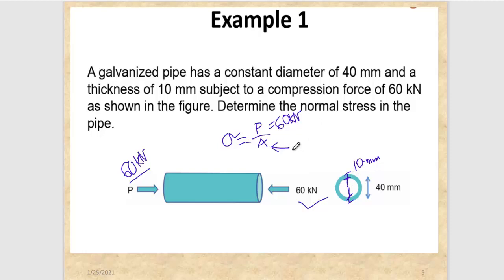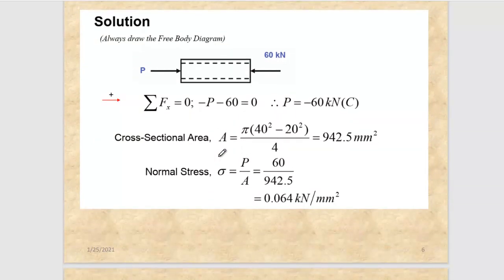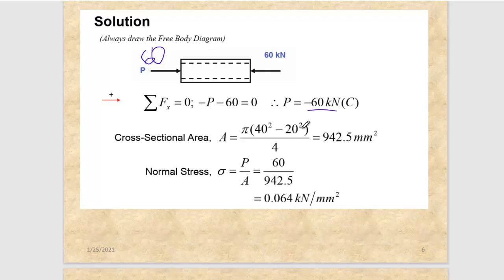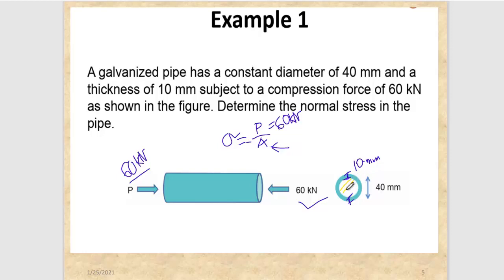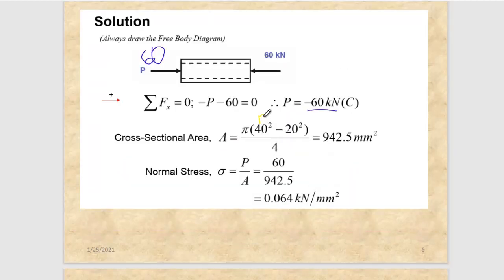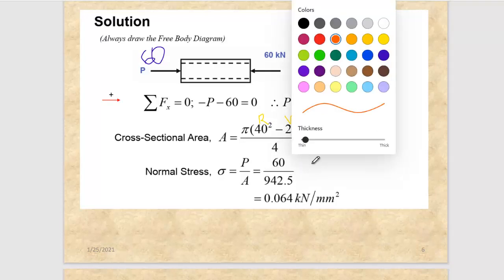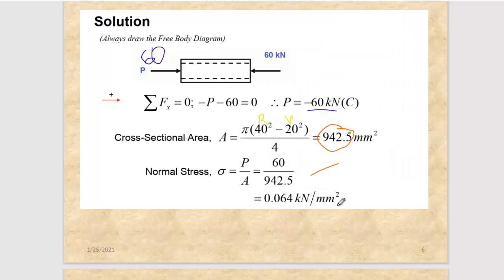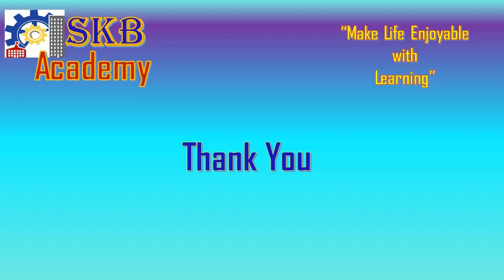From equilibrium, P equals 60 kN. The negative sign shows it is compression. For the area: total diameter is 40 mm, hollow diameter is 20 mm. You take the total circle and reduce the hollow part — using the outer radius R and inner radius r. Once you get the area, the stress calculation is straightforward. Keep in mind: force was in kilonewton and area is in millimeter squared, so the stress unit is force over area.